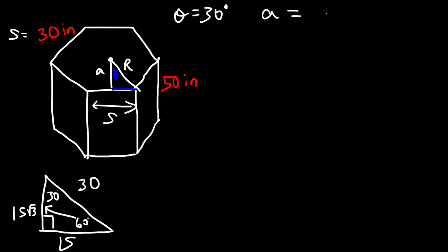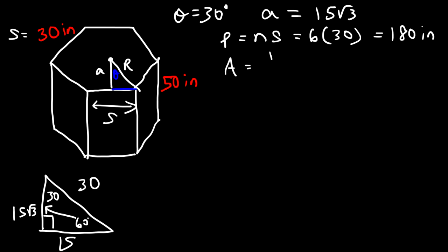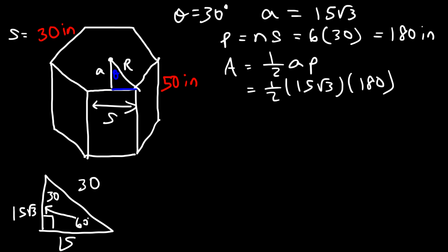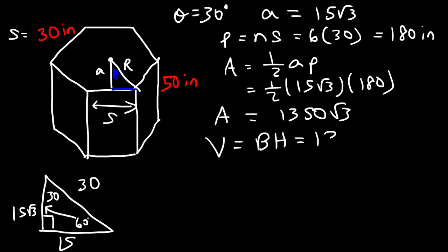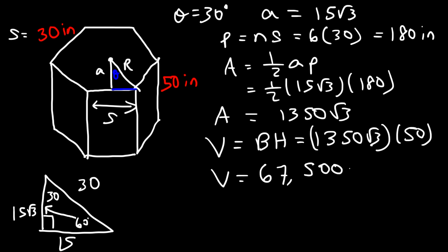Now that we know the apothem is 15 square root 3, we can calculate the area of the base. The perimeter is N times S: a six-sided figure with S equal to 30 gives a perimeter of 180 inches. The area of the base is one half times the apothem times the perimeter — one half times 15 square root 3 times 180. Half of 180 is 90, and 90 times 15 is 1350, so the area is 1350 square root 3. The volume is the base times height: 1350 square root 3 times 50, which is 67,500 square root 3.